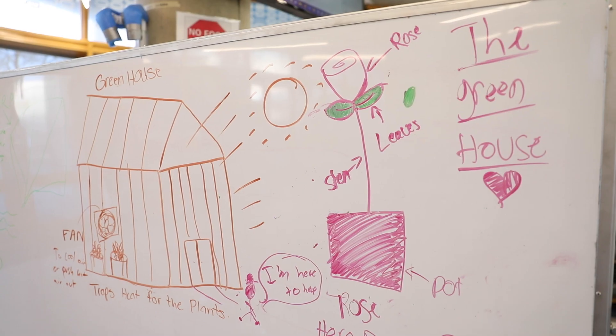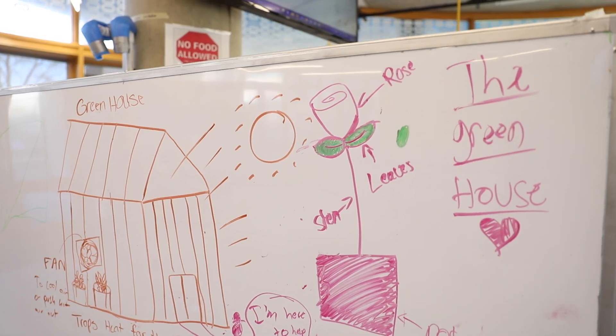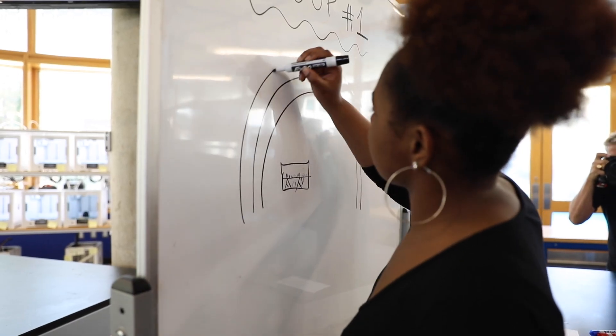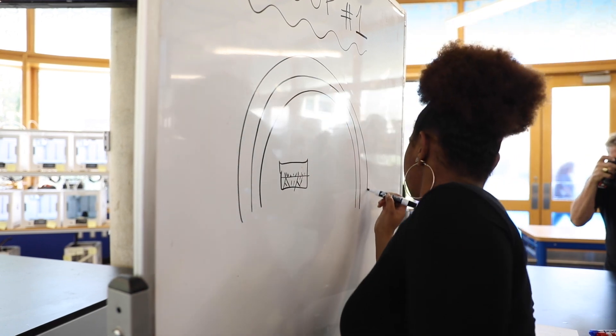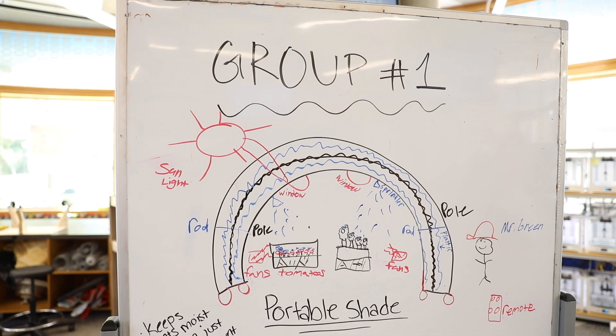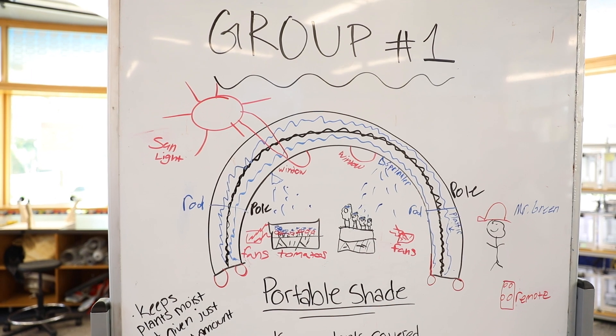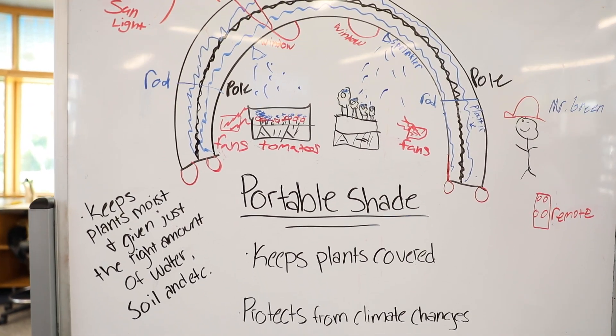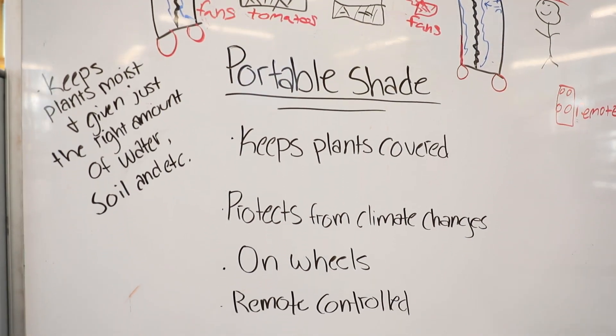We've had a pretty jam-packed schedule for our students over the last couple of days of the ODE hackathon. The students are primarily working on projects related to caring for a garden at Lowes Grove Middle School. Accordingly, it looks like our teams are interested in developing devices to help maintain soil and plant moisture in a hot North Carolina summer, and ways to provide temperature regulation so that plants in the garden don't become too hot or too cool.